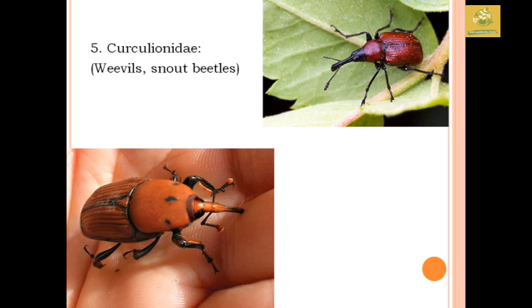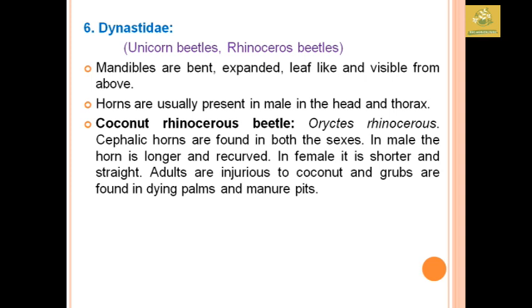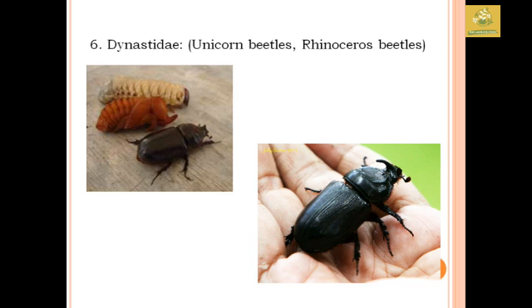Dynastidae comprises unicorn beetles and rhinoceros beetles. Mandibles are bent and expanded with leaf-like structures visible above. Horns are usually present in males and absent in females, located on the head and thorax. An example is the coconut rhinoceros beetle, Oryctes rhinoceros. Cephalic horns are found in both sexes, but in males they are longer and recurved while in females they are shorter and straight. Adults are injurious to coconut, and grubs are found in dying palms and manure pits.